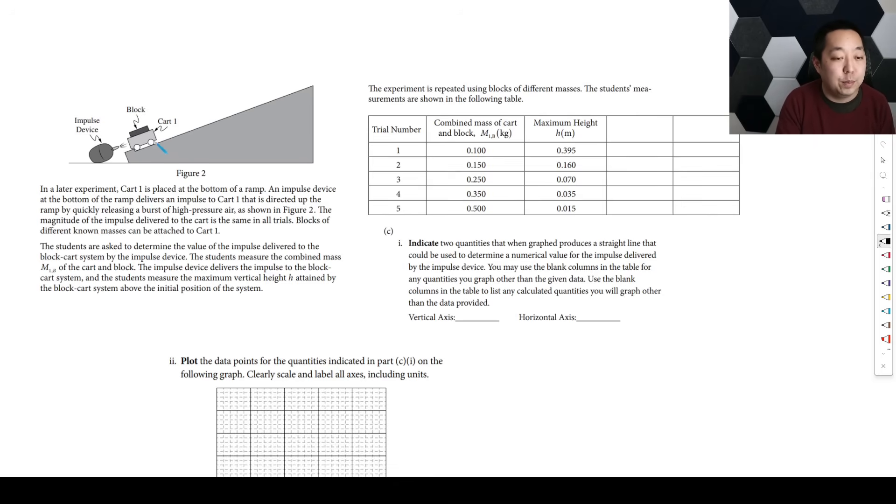In a later experiment, cart 1 is placed at the bottom of a ramp. An impulse device at the bottom of the ramp delivers an impulse to cart 1 that's directed up the ramp by quickly releasing a burst of high pressure air shown in figure 2. The magnitude of the impulse delivered to the cart is the same in all trials. Blocks of different known masses can be attached to cart 1. Students are asked to determine the value of the impulse delivered to the block cart system. The students measure the combined mass of the cart and block and the maximum vertical height that they reach. The experiments are repeated using different blocks of different masses.